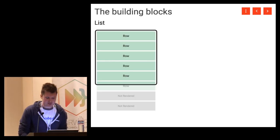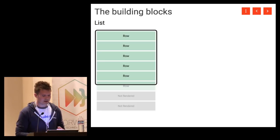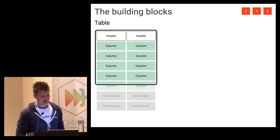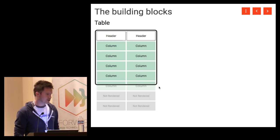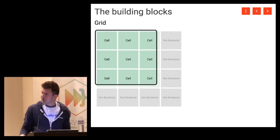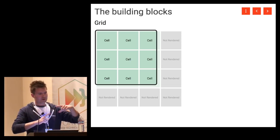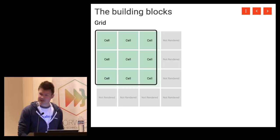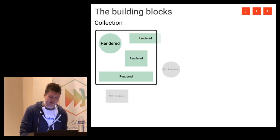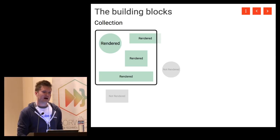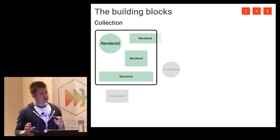React Virtualize has several components you can use out of the box. The first is List, which manages windowing in a vertical direction. There's also Table, which does columned windowing vertically with a fixed header and a windowed scrollable body. Then there's Grid, which windows both horizontally and vertically — great for spreadsheets or large charting applications. And then there's Collection, for less common layouts like masonry layouts like Pinterest uses, Gantt charts, or layouts where data position in the array doesn't correspond to its position on screen.